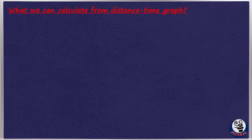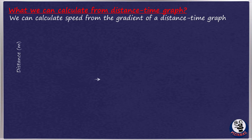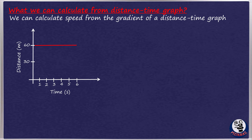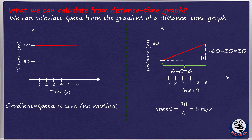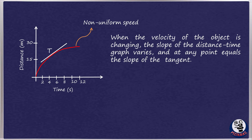We can actually calculate the speed from a distance-time graph. If the slope is zero, the object does not move. For a moving object, we draw a right-angle triangle on the graph and calculate the tangent of the angle. The ratio of the difference of the y-coordinates (30 meters) to the difference of the x-coordinates (6 seconds) gives us the slope. So the speed of this object is 5 meters per second. This rule is also true for non-uniform speed graphs — when velocity is changing, the slope varies, and at any point it equals the slope of the tangent.